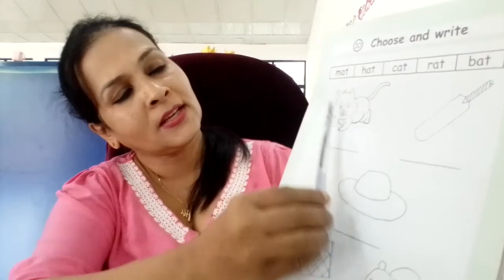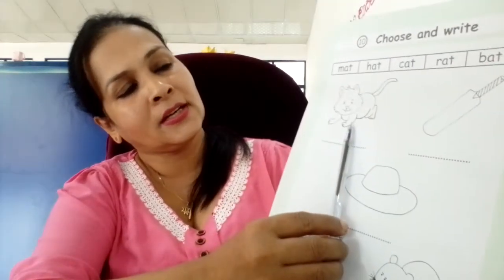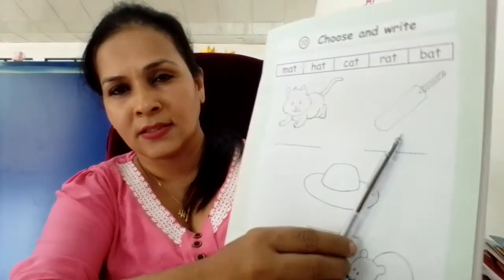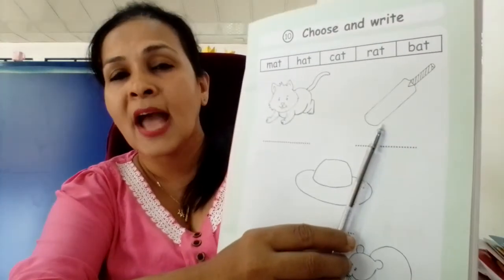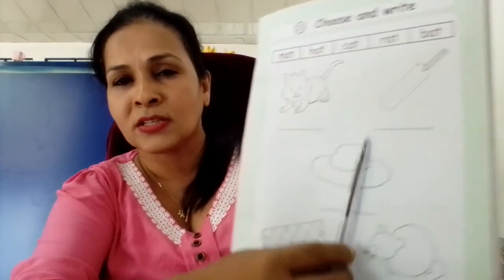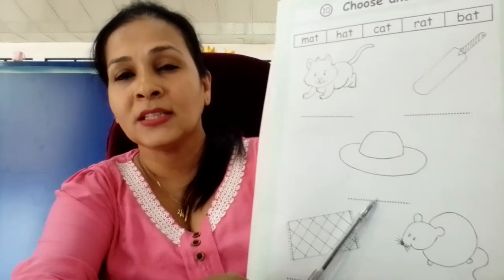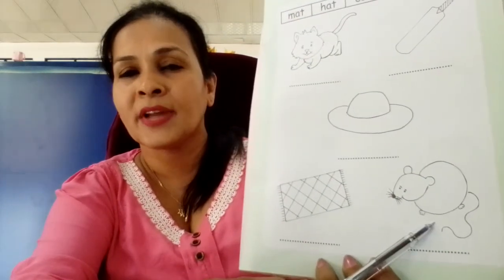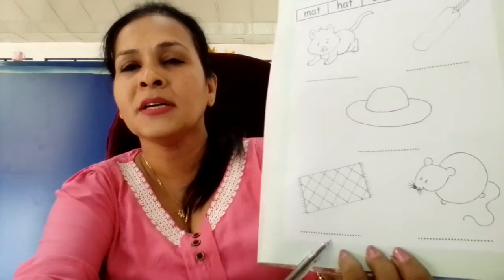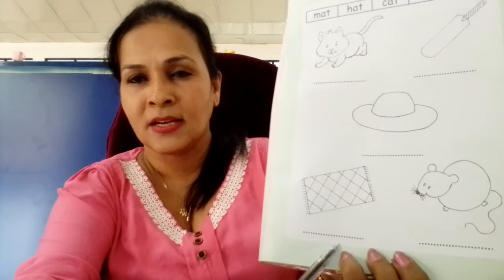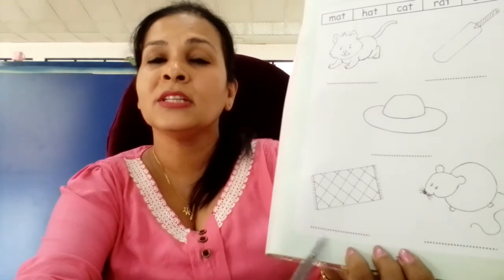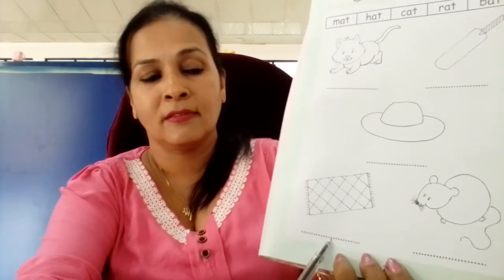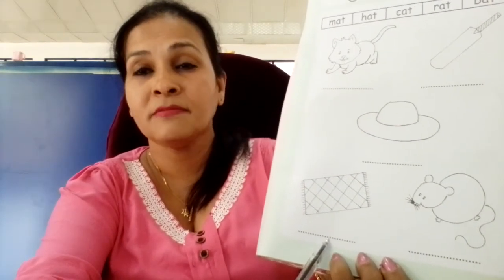Now see: C, at, cat. B, at, bat. H, at, hat. R, at, rat. M, at, mat. Write on these dotted lines — what is the word?